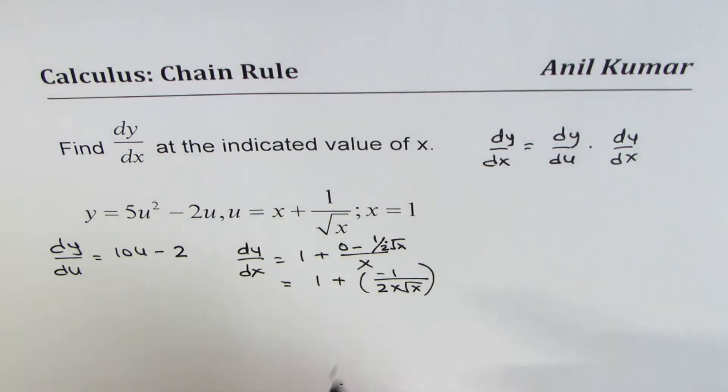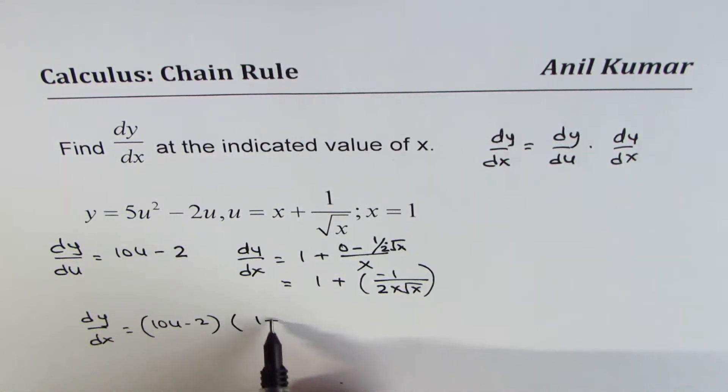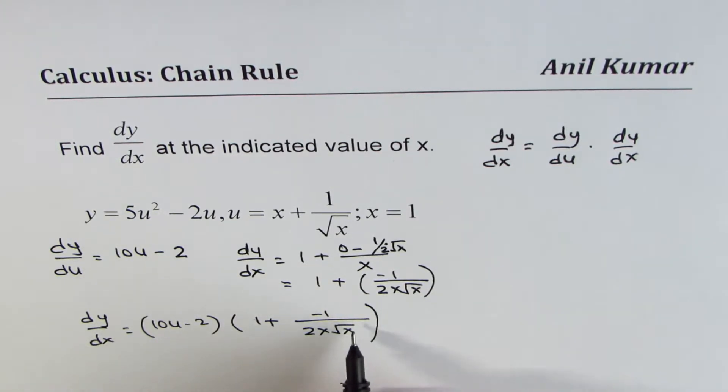Now, what is dy/dx? dy/dx is product of these two. So we can write dy/dx is equal to 10u minus 2 times 1 plus minus 1 over 2x square root x. You need not even write this as 3 over 2. We need to find dy/dx at x equals 1.